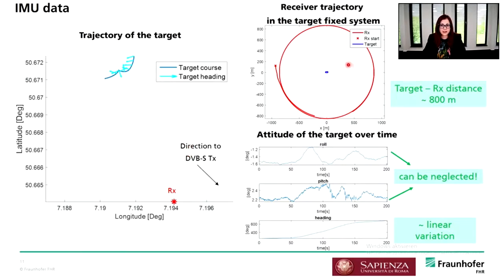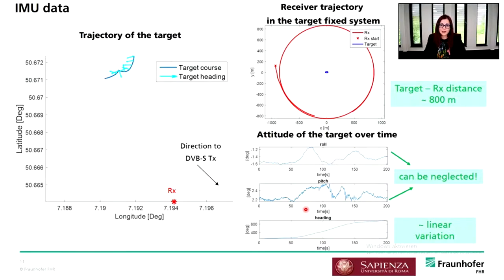The target was equipped with an IMU located on the central superstructure. From the IMU data, we obtained the trajectory of the target in latitude-longitude coordinates, with respect to the receiver position and the DVB-S satellite direction. Projecting the trajectory into a target-fixed system, we can clearly see how the target was rotating around itself during the acquisition — nearly ideal for ISAR imaging. Considering the attitude over time, roll and pitch angles were quite negligible, while the main attitude change was the heading/yaw angle, showing a quite linear variation over time.